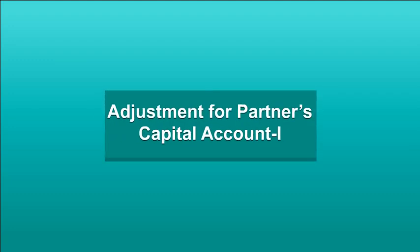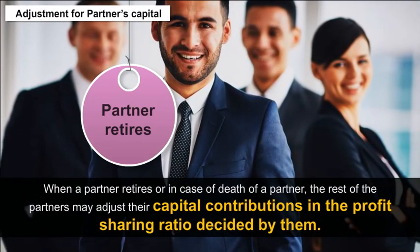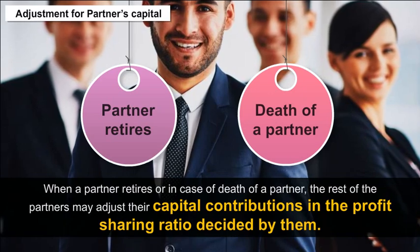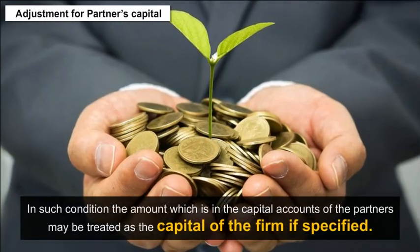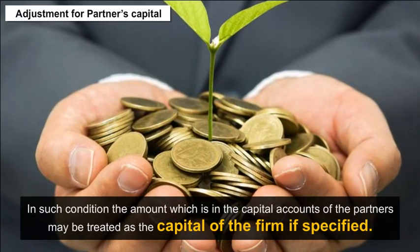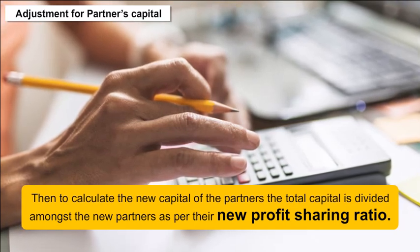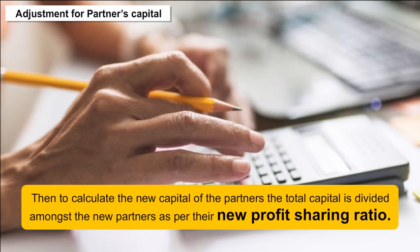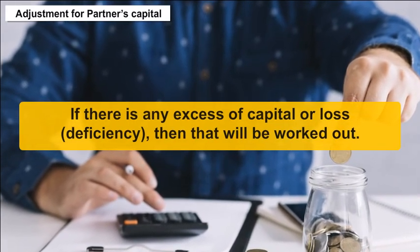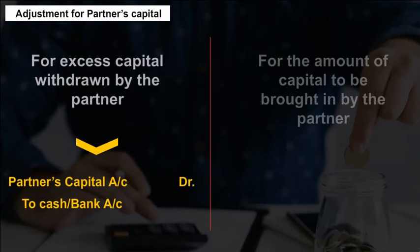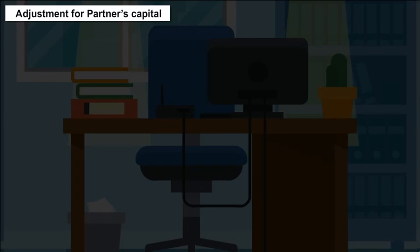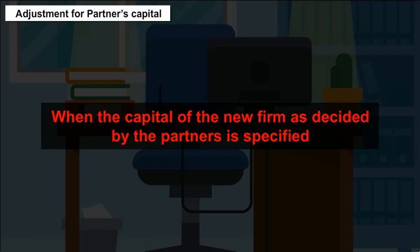Adjustment for partner's capital account: When a partner retires or dies, the remaining partners may adjust their capital contributions in the profit sharing ratio decided by them. The amounts in capital accounts may be treated as the total capital of the firm. The total capital is then divided amongst the new partners as per their new profit sharing ratio, and any excess or deficit of capital is worked out. Situation A: When the capital of the new firm as decided by the partners is specified.